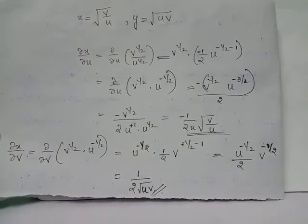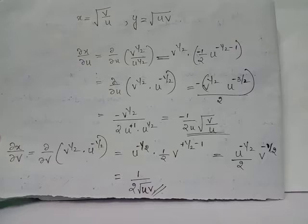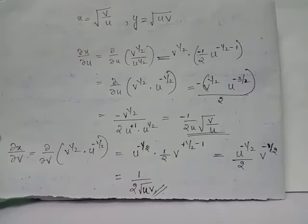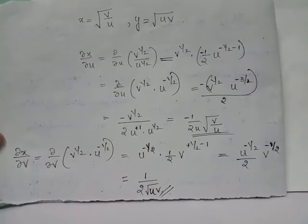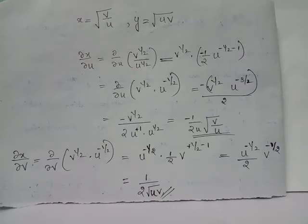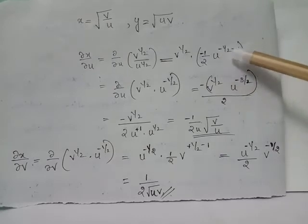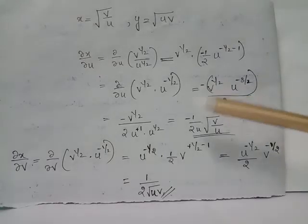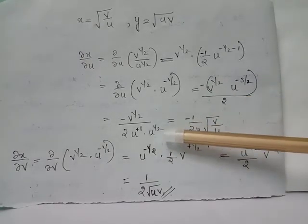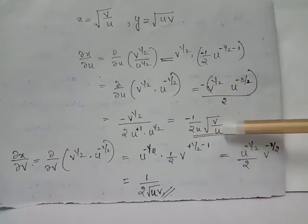To evaluate ∂x/∂u, we apply ∂/∂u to x = v^(1/2) · u^(-1/2), treating v as a constant. Applying the power rule, u^(-1/2) differentiates to -1/2 · u^(-3/2). Splitting u^(-3/2) as u^(-1) · u^(-1/2), we obtain ∂x/∂u = -1/(2u) · √(v/u).